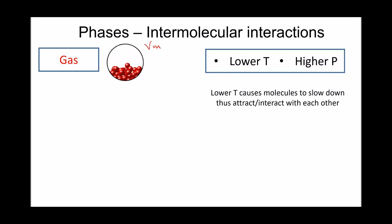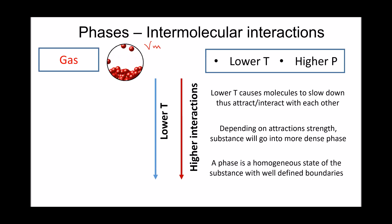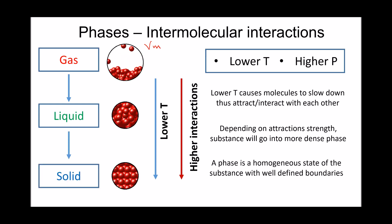Lower temperature specifically is going to slow down the molecules and give them a chance to attract each other. Once they start attracting each other, they will start behaving non-ideally, and eventually, as the attraction grows larger, they will move to a denser phase like a liquid phase and even a solid phase. All these changes depend on intermolecular forces.